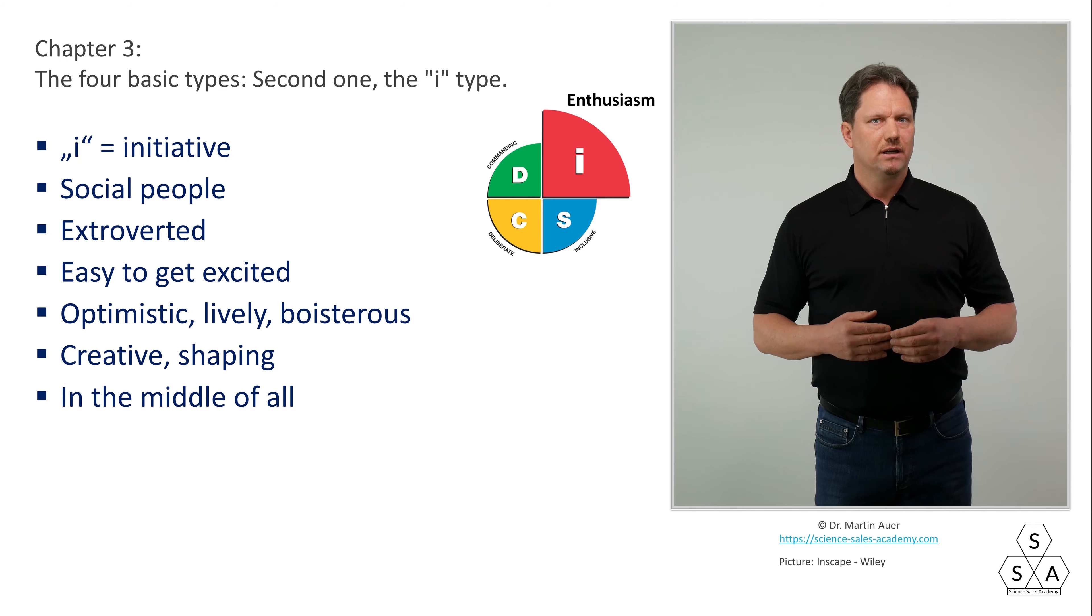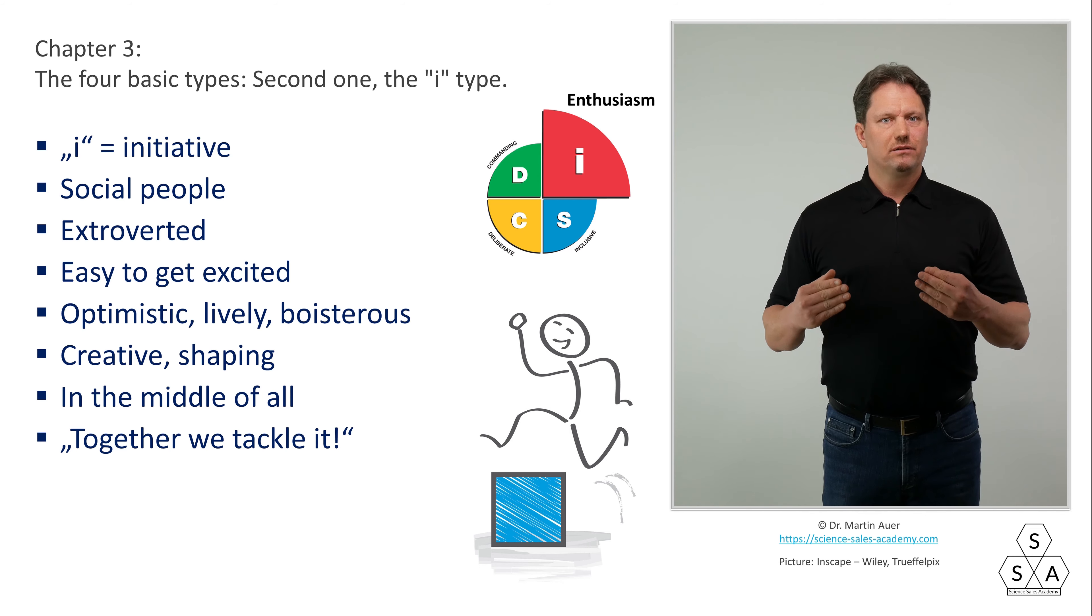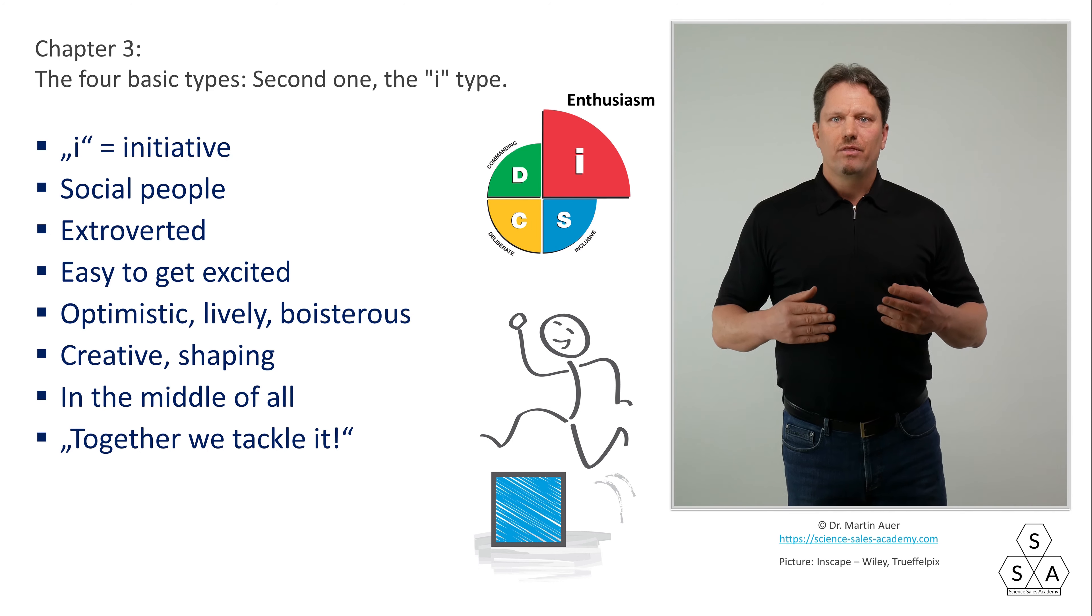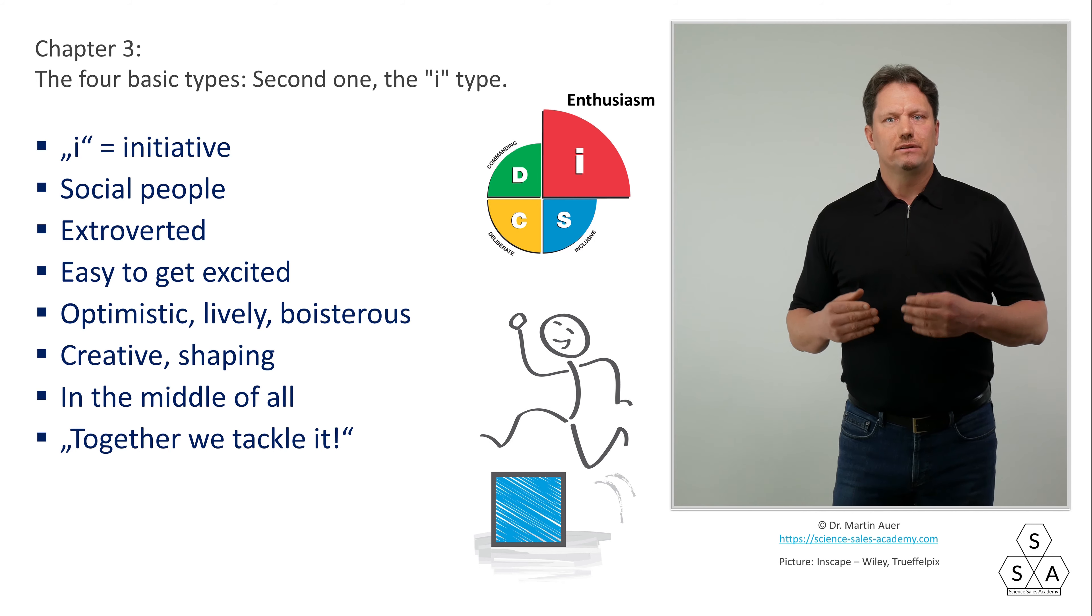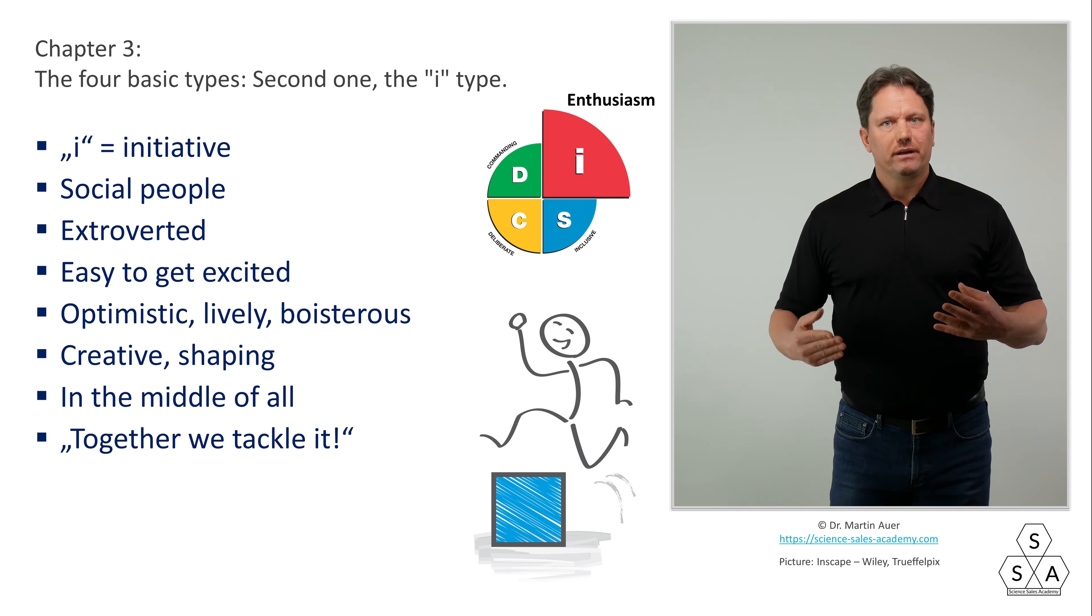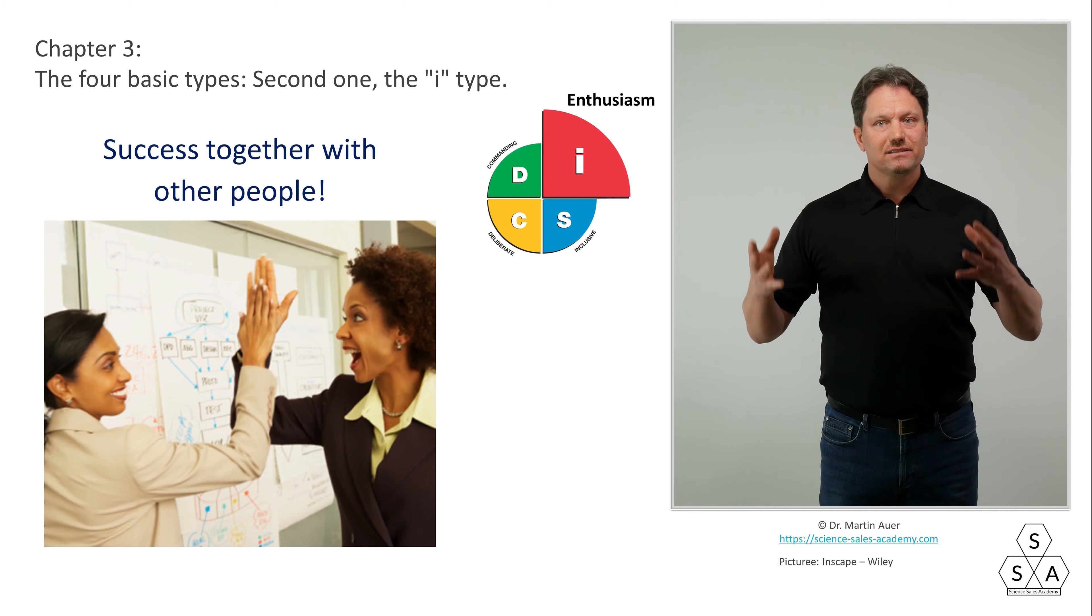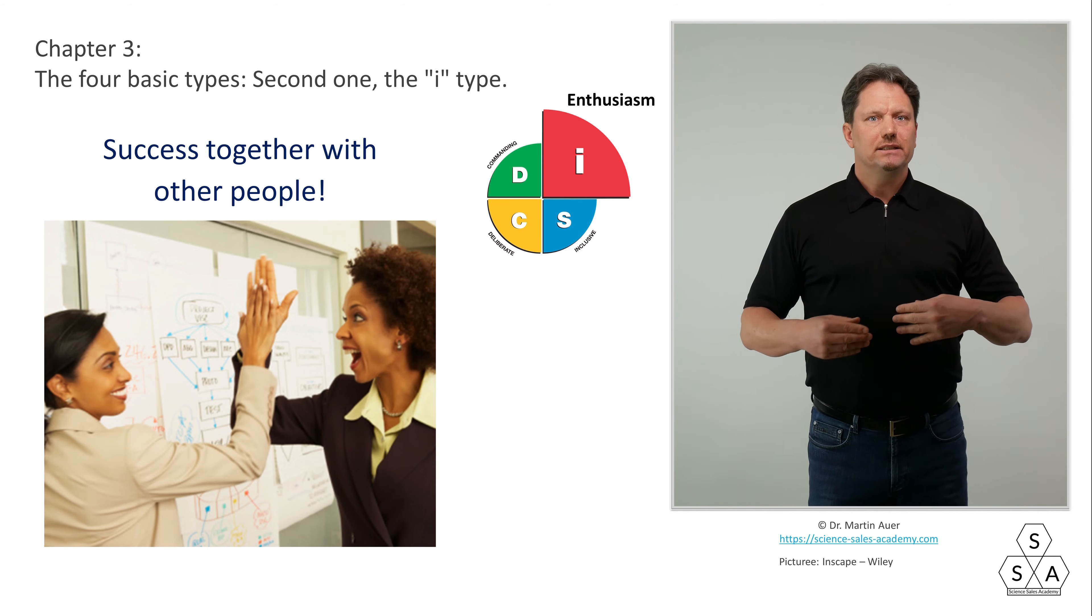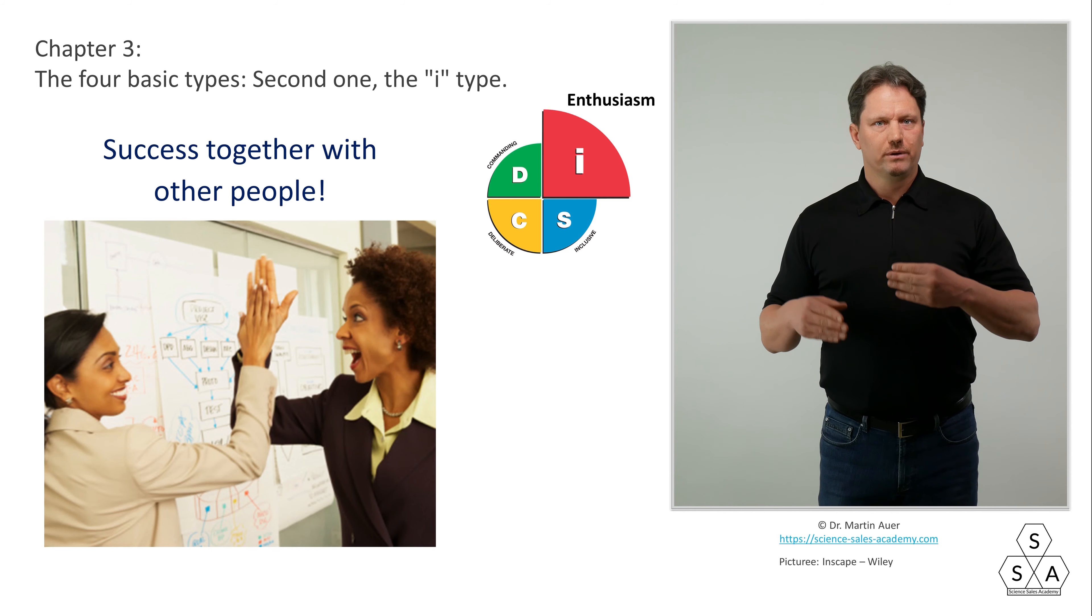The dominant type likes to be the boss of the group. The I-type is more interested in success in and with and by the group. Together we tackle it, is the motto here. If an I-type would find a big rock in their way, they could immediately join forces with other people to get the rock out of their way. And if at the end there's a nice little party as a reward for the group, then everything is achieved. Celebrate a success achieved by the group - that's great. Thus, the I-type also loves the dynamics and achieving goals, but it's also important to cooperate with other people.